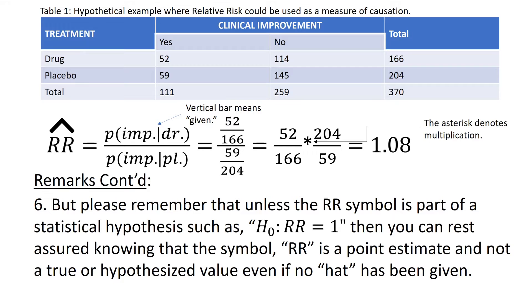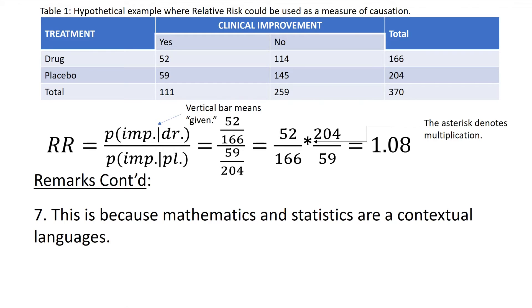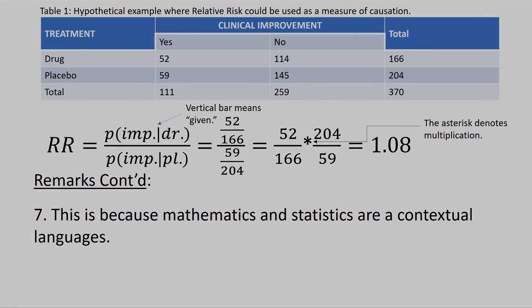Please remember that, unless the relative risk symbol is part of a statistical hypothesis — such as the null hypothesis that relative risk is equal to 1 — then you can rest assured knowing that the symbol relative risk is a point estimate and not a true or hypothesized value, even if no hat has been given. This is because mathematics and statistics are contextual languages.